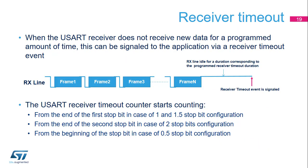The USART supports a receiver timeout feature. When the USART doesn't receive new data for a programmed amount of time, a receiver timeout event is signalled and an interrupt is generated if enabled. The receiver timeout counter starts counting from the end of the first stop bit in case of 1 or 1.5 stop bit configuration, from the end of the second stop bit in case of 2 stop bits, or from the beginning of the stop bit in case of half stop bit configuration.